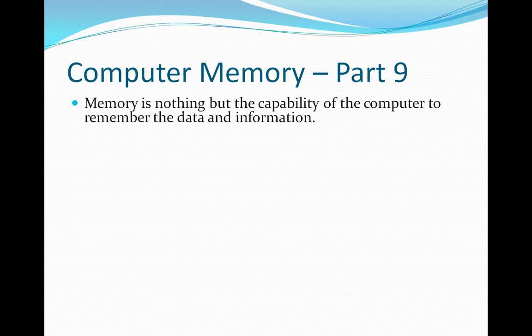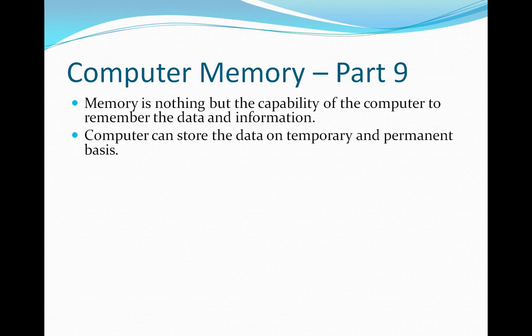Computer can store the data either on a temporary or a permanent basis. Just like a human being, we store some data permanently and some temporarily. Whatever data you want to store permanently—examples: phone numbers, contact numbers, names, persons, places.